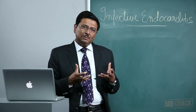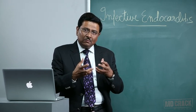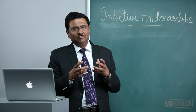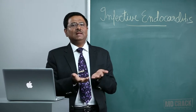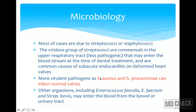If the organism is of less virulence, it will attack a portion of the endocardium that is already damaged. But if the organism is of high virulence, it can infect normal areas of the endocardium also. More virulent pathogens such as Staphylococcus aureus and Streptococcus pneumoniae can infect normal valves. Other organisms including Enterococcus faecalis, enterococcus, and Streptococcus bovis may enter the blood from the bowel or urinary tract.